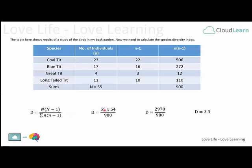Finally, if we have a look at what we do with the formula, we see that we've got N times N minus 1. That's going to be 55 times 54. And we divide by the sum of the N times N minus 1s, which is going to be 900.